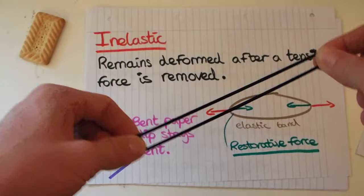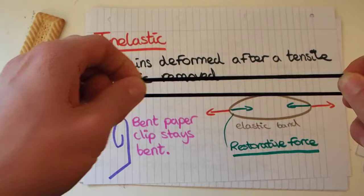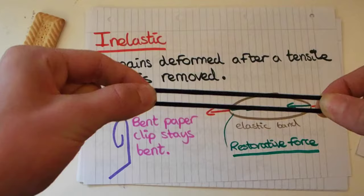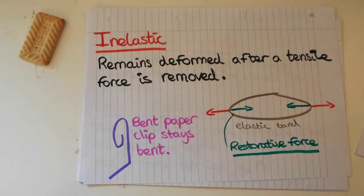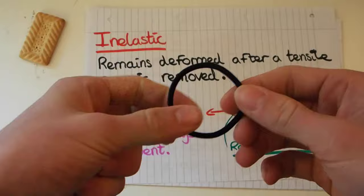When I pull an elastic object, the restorative force is trying to stretch it back to its original shape. The atoms are joined together and they're all pulling themselves back because they want to be in the original shape.